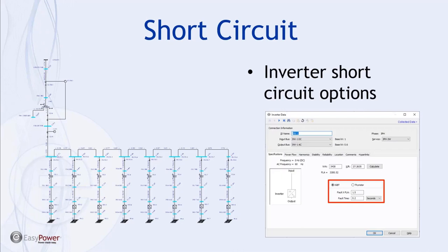The program differentiates between IGBT or thyristor-type inverters. For short circuit calculations, the difference is inconsequential, but for power flow the thyristor-type inverters will have additional data entry fields. Inverter fault characteristics are basically a multiple of the full load amps of the inverter and a duration, so depending on the type of analysis you're doing, you may select different points in the inverter's fault AC waveform to simulate.